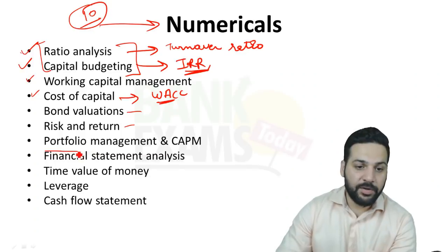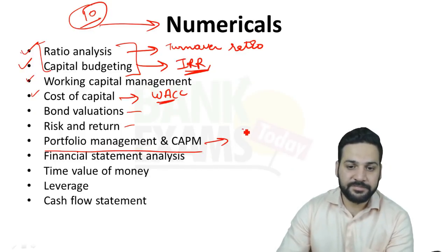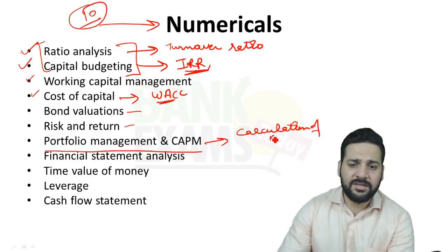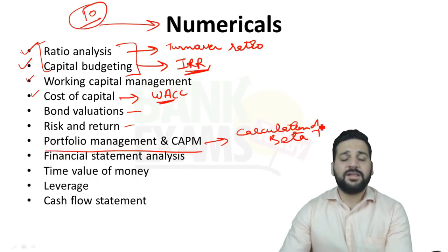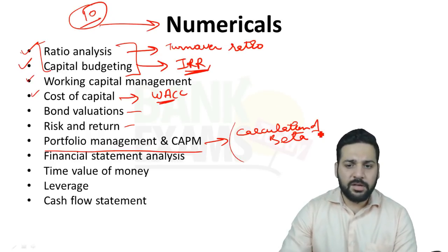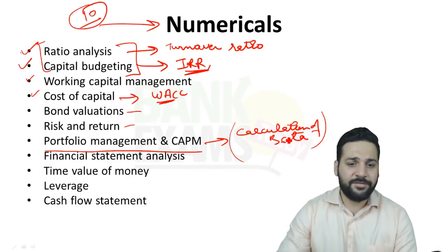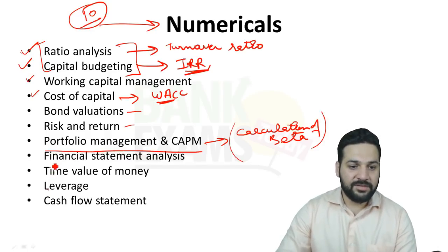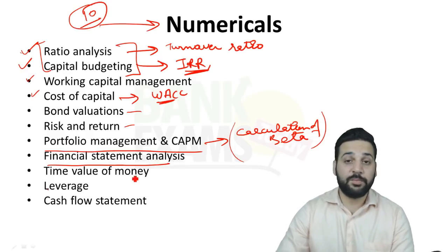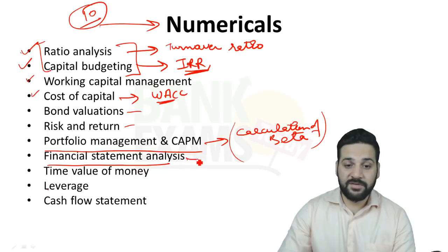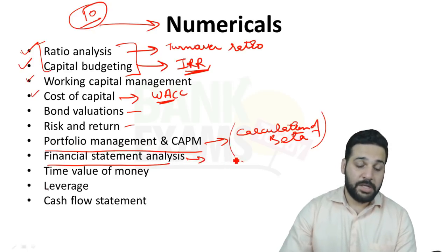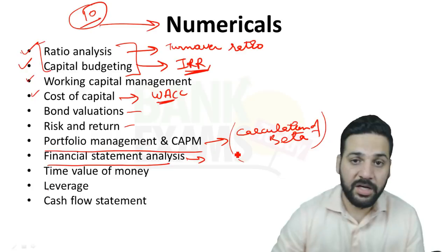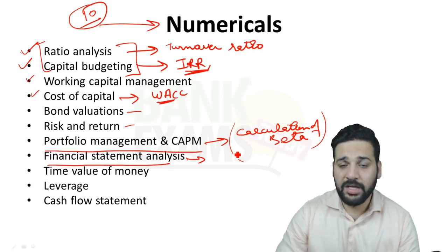Bond valuation and the risk and return topic are important. The CAPM is really, really important — specifically the calculation of beta. There is a simple equation for this that I've already taught, and this question is repeated in almost every exam. Then there is financial statement analysis, which is a broad chapter — in the last exam there was a question from the straight-line depreciation method.